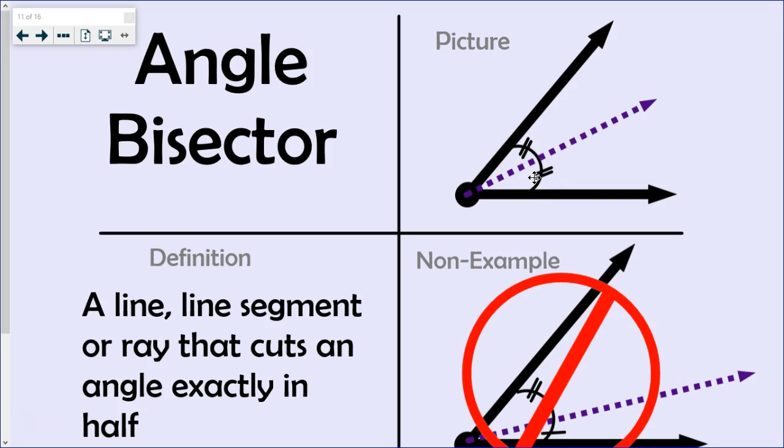Take a look at the non-example. Notice that the dashed line does not divide the angle into two equal measured pieces. So this is not an angle bisector because it does not divide it into two equal pieces.